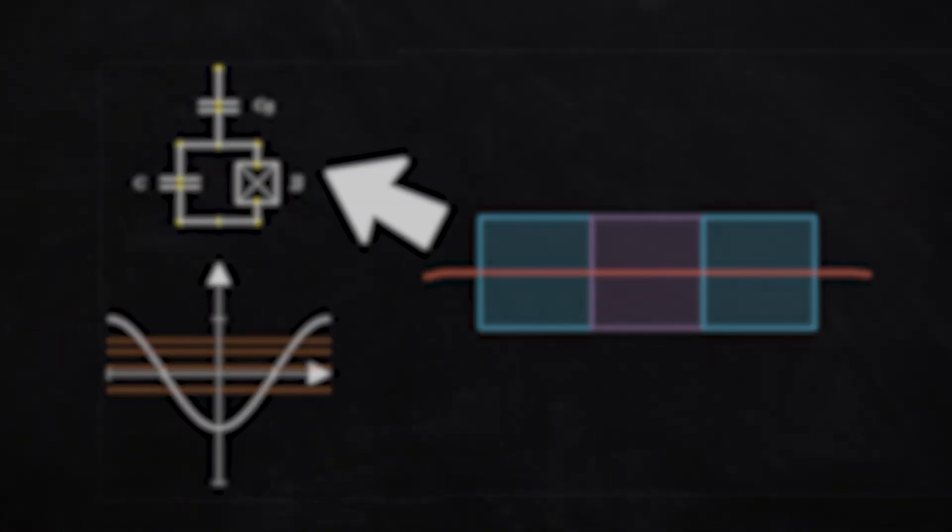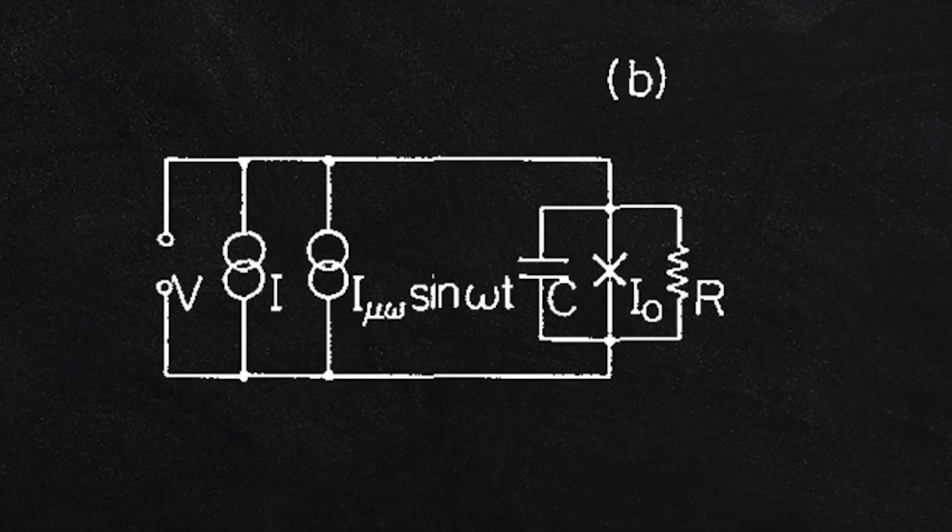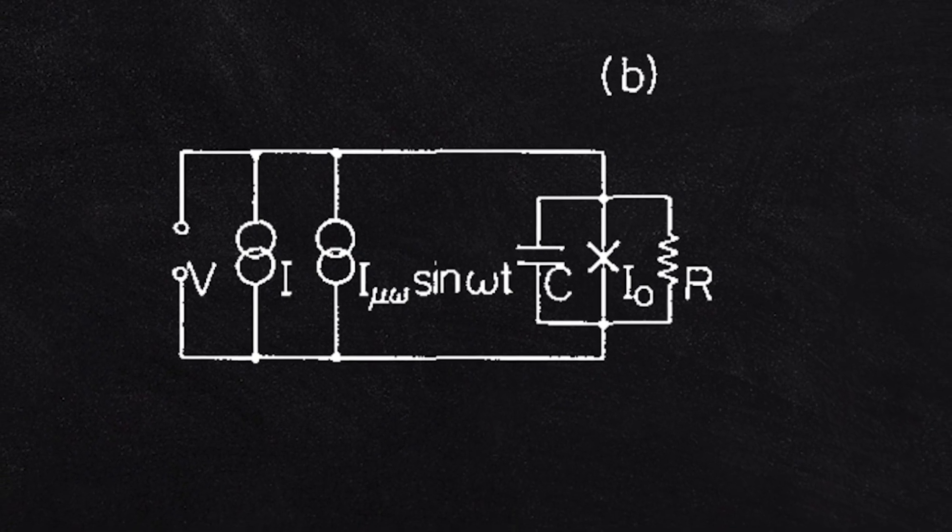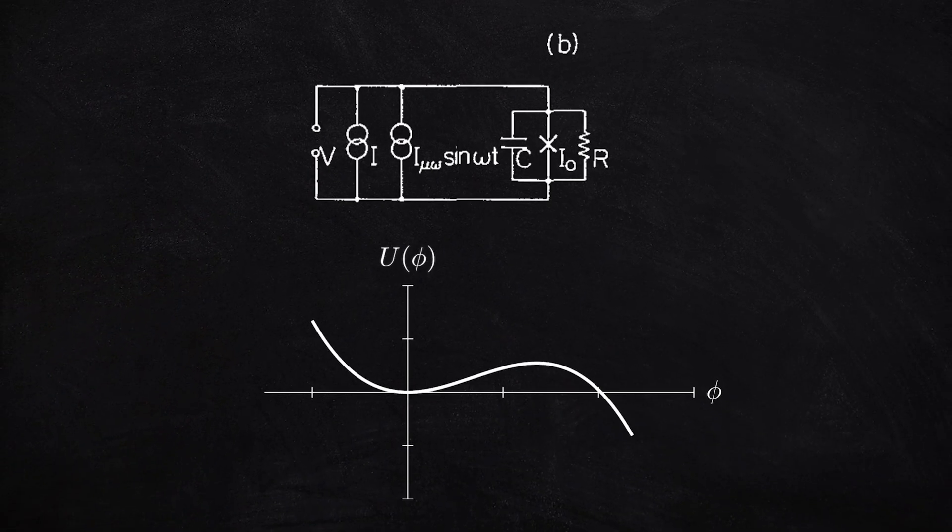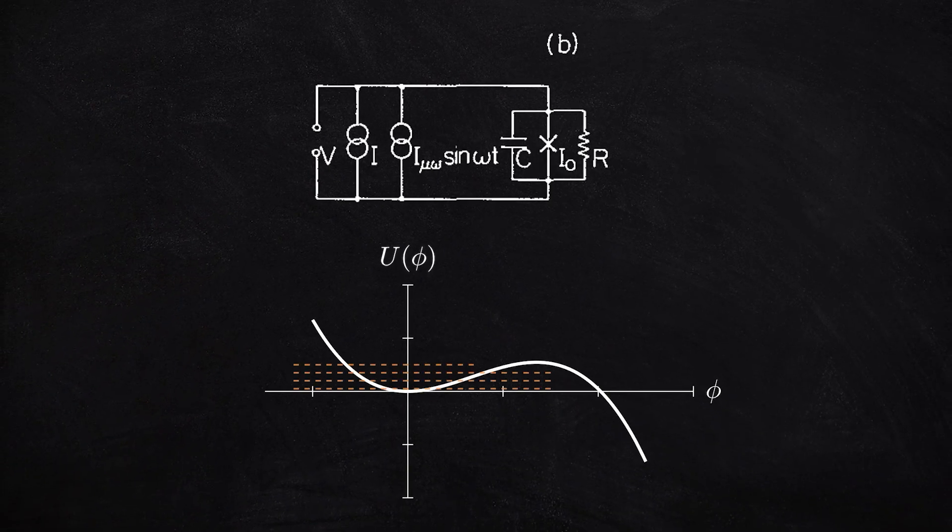This is the innovation of the Nobel Prize winning team. They created the first superconducting circuit with a Josephson Junction, showing that the quantum behavior of the Cooper pairs and Josephson Junctions extended to the full circuit. In other words, the circuit had quantized energy levels.